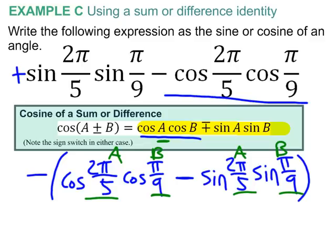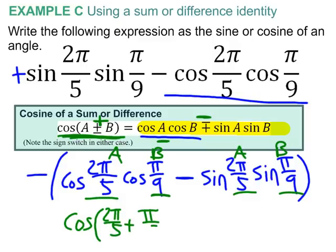if A is 2 pi over 5 and B is pi over 9, that means that I can say that that whole thing is equal to this left side. Now, notice that since we have a minus in this position, that means we need the plus over here in this position. So, this will be cosine of 2 pi over 5 plus pi over 9. And, as far as what to do with this minus sign hanging out here on the outside, let's just bring that along for the ride. Now,